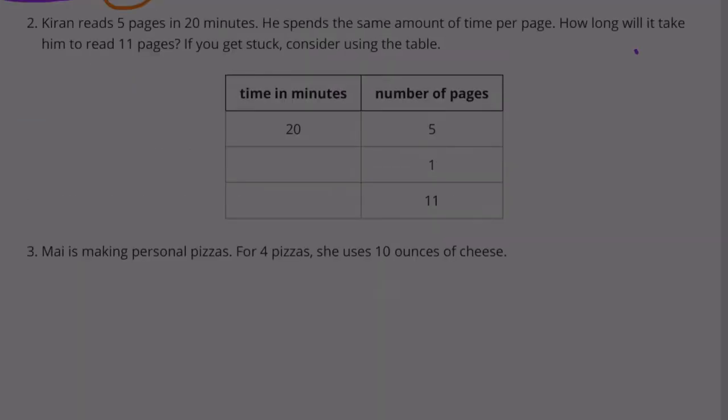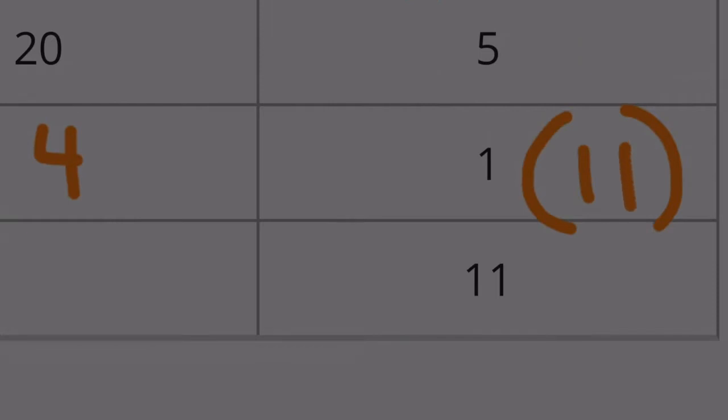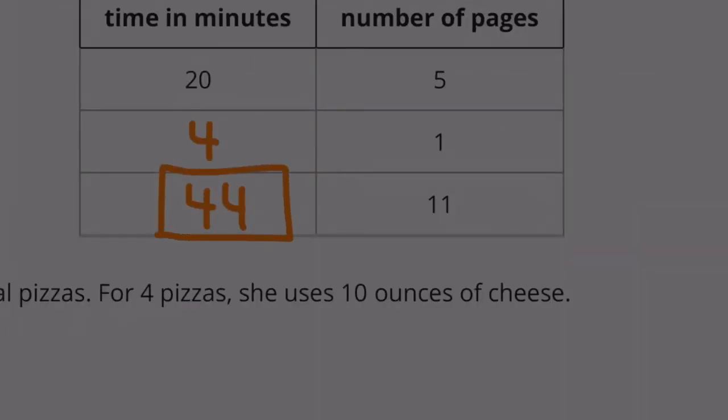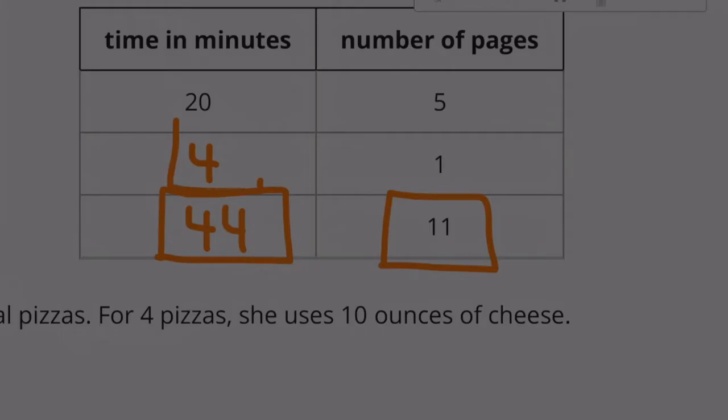Number 2. Kieran reads 5 pages in 20 minutes. He spends the same amount of time per page. How long will it take him to read 11 pages? If you get stuck, consider using the table. 20 to 5. 5 multiplied by its reciprocal gets you to 1. So 5 times 1 fifth equals 1, or 5 divided by 5 equals 1. So we need to divide this side by 5. 20 divided by 5 equals 4. So the ratio of 20 to 5 is equal to the ratio of 4 to 1. 1 times 11 equals 11. So 4 times 11 is going to equal 44. So in 44 minutes, Kieran can read 11 pages.